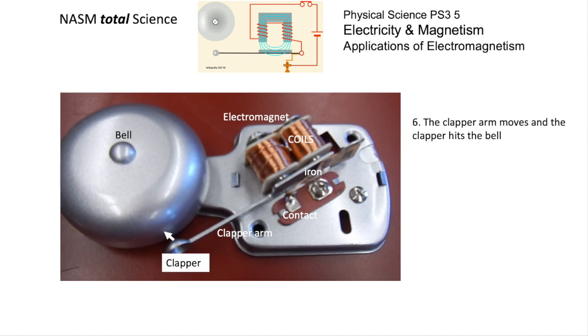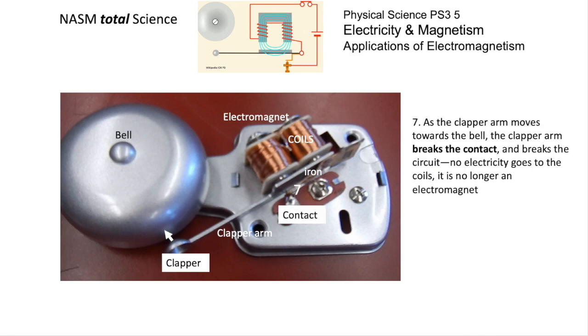That's what you will hear. As the clapper arm moves towards the bell, it breaks the contact at number seven shown there, and so no electricity goes into the coil. The switch is on, but you've got a break in the circuit within the bell mechanism.